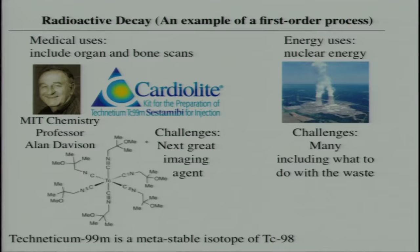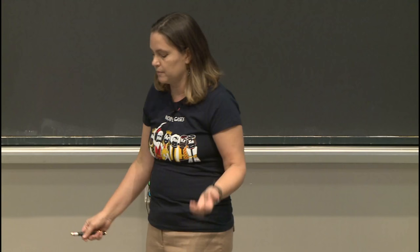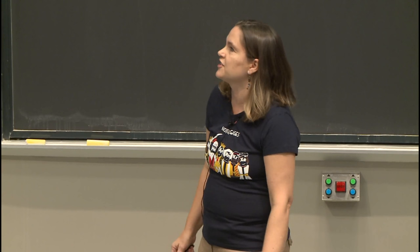Radioactive decay is a classic example of a first-order process. We are doing one small section of the chapter on nuclear chemistry today, covering problems associated with first-order processes. There is just a small introduction to this idea.